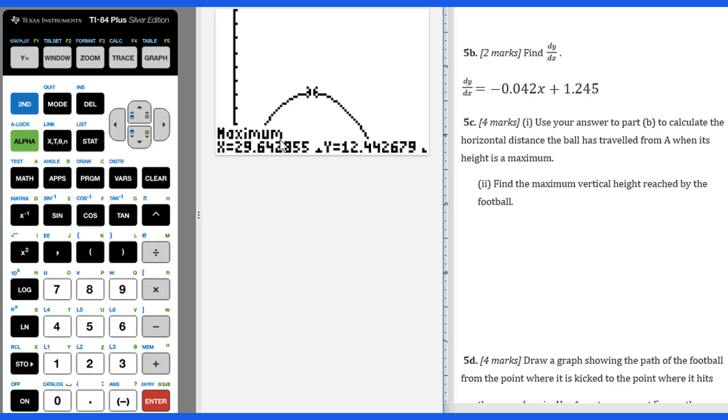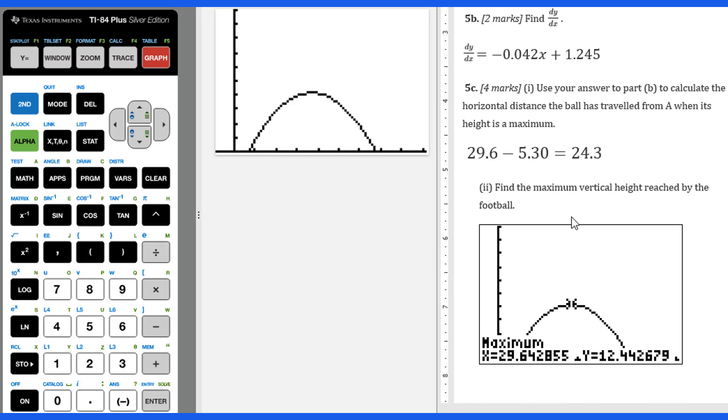So your maximum point is 12.4 and the x equals 29.6. But if you're looking for the distance the ball has traveled from A when its height is maximum, you have to use 29.6 minus, there's a, this is the starting point, that's 5.30. That equals 24.3 meters.